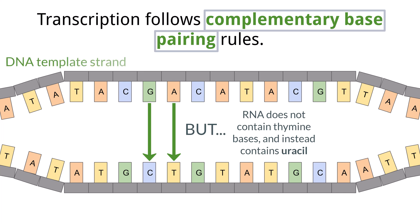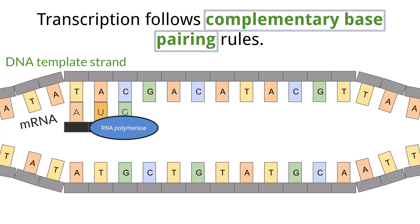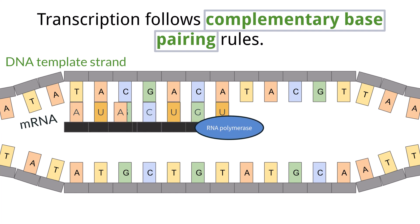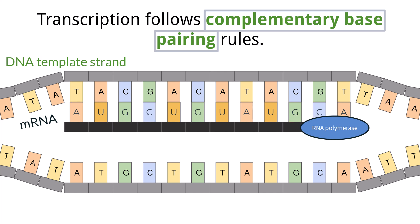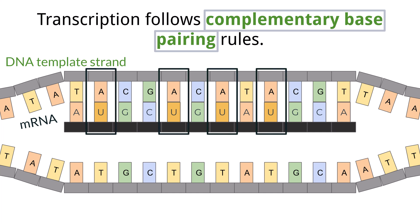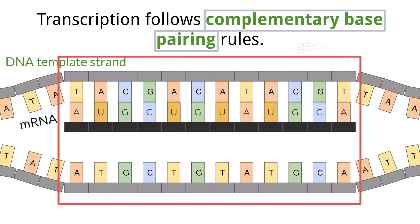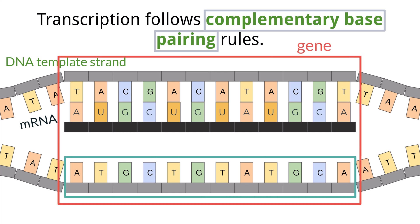If this template strand of the DNA was transcribed by RNA polymerase, it would read AUGCUGUAUGCA as the messenger RNA sequence. Notice that all of the A bases in the template strand pair with a U in the messenger RNA strand. The section of DNA that is transcribed is called a gene. The section of DNA that we want to make a messenger RNA copy of is called the coding strand, or the sense strand.